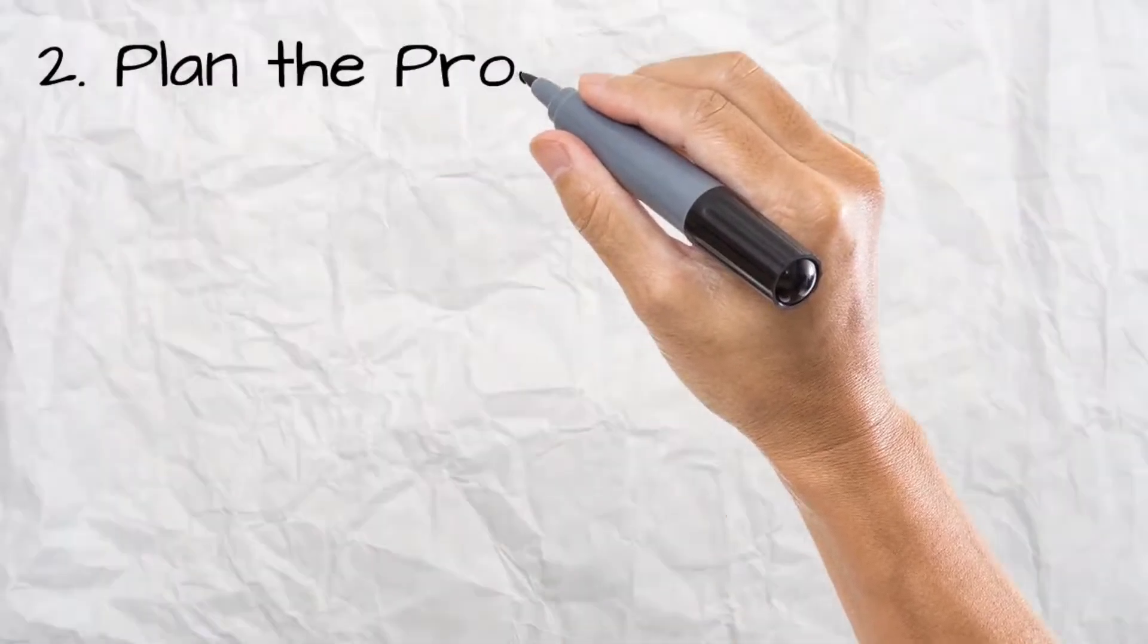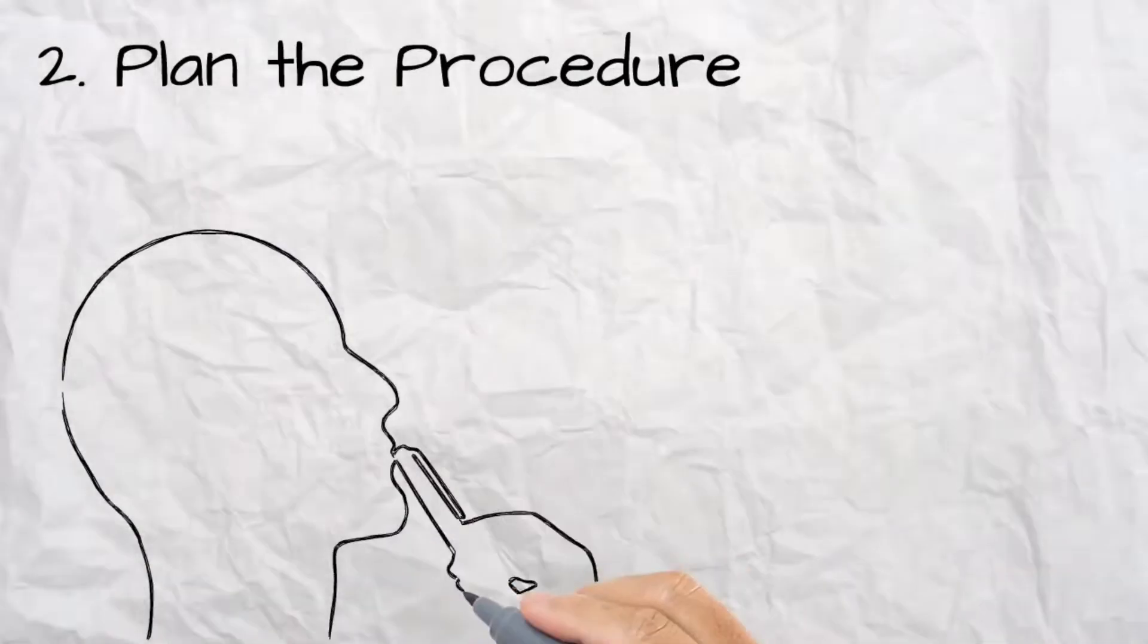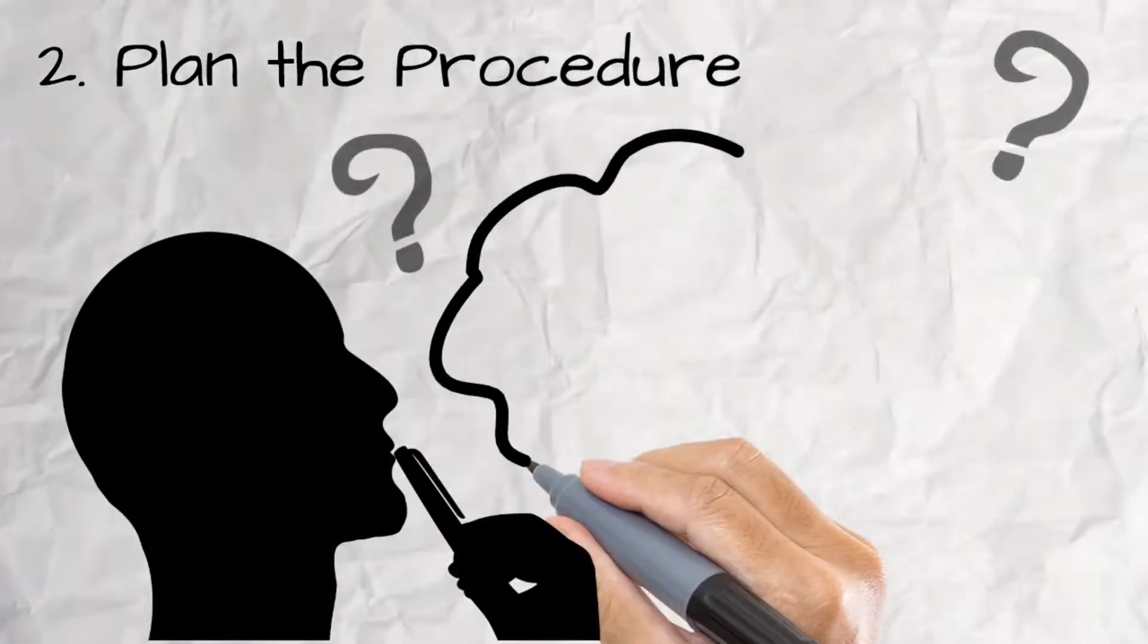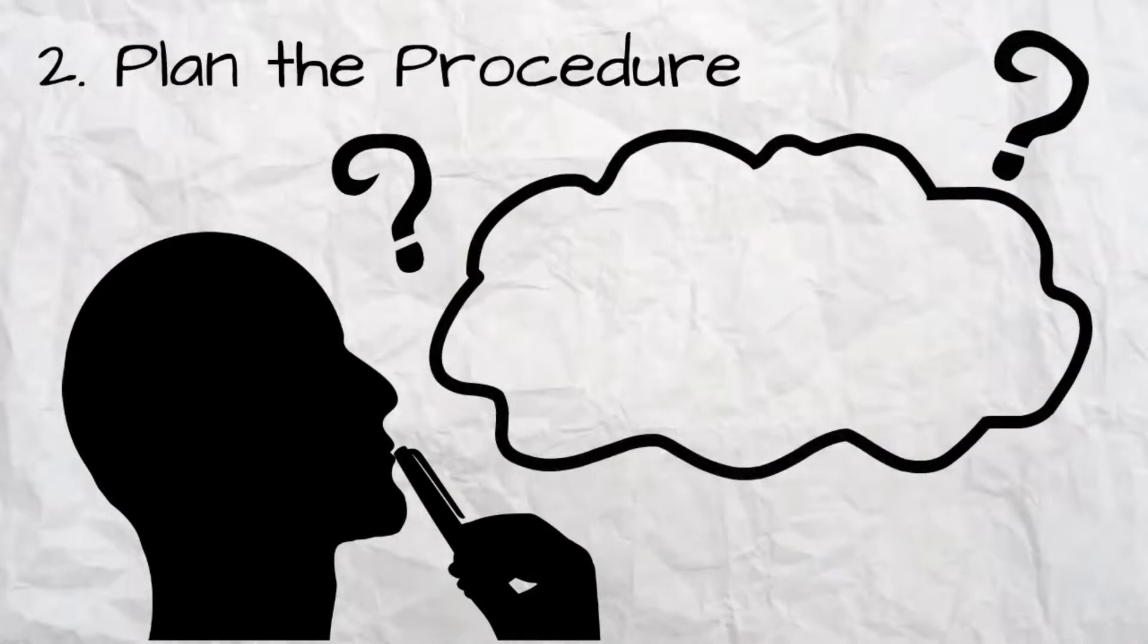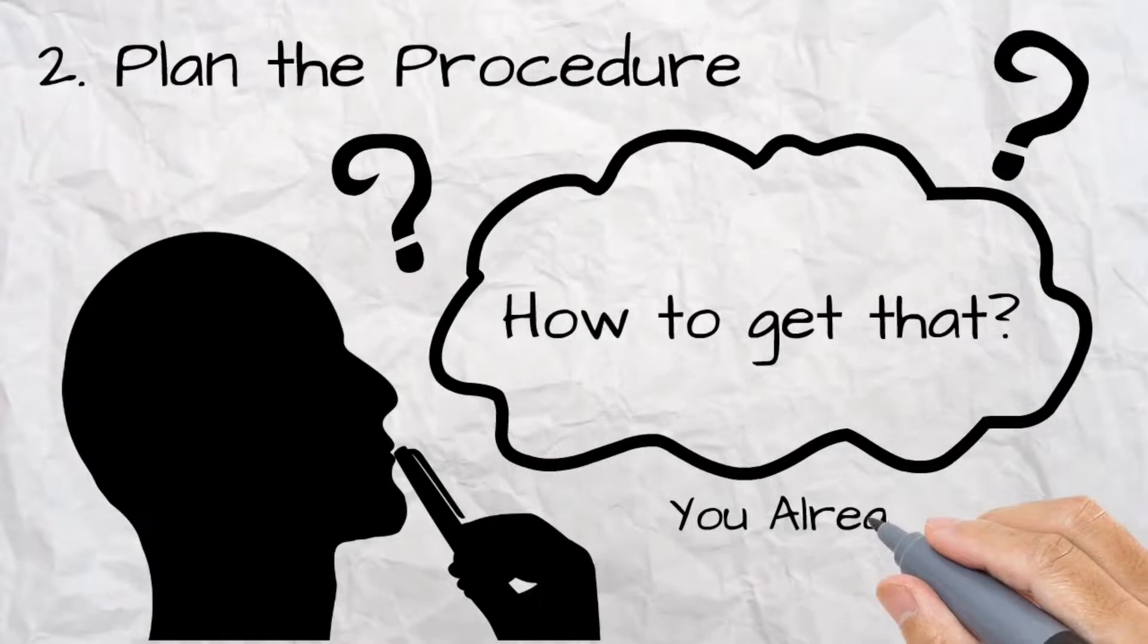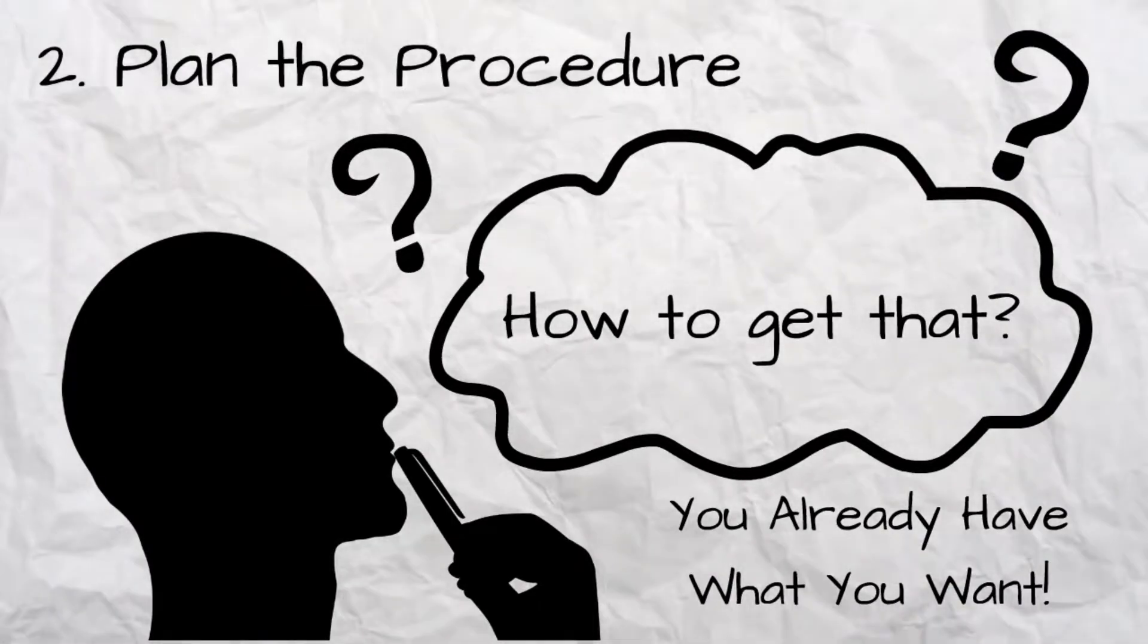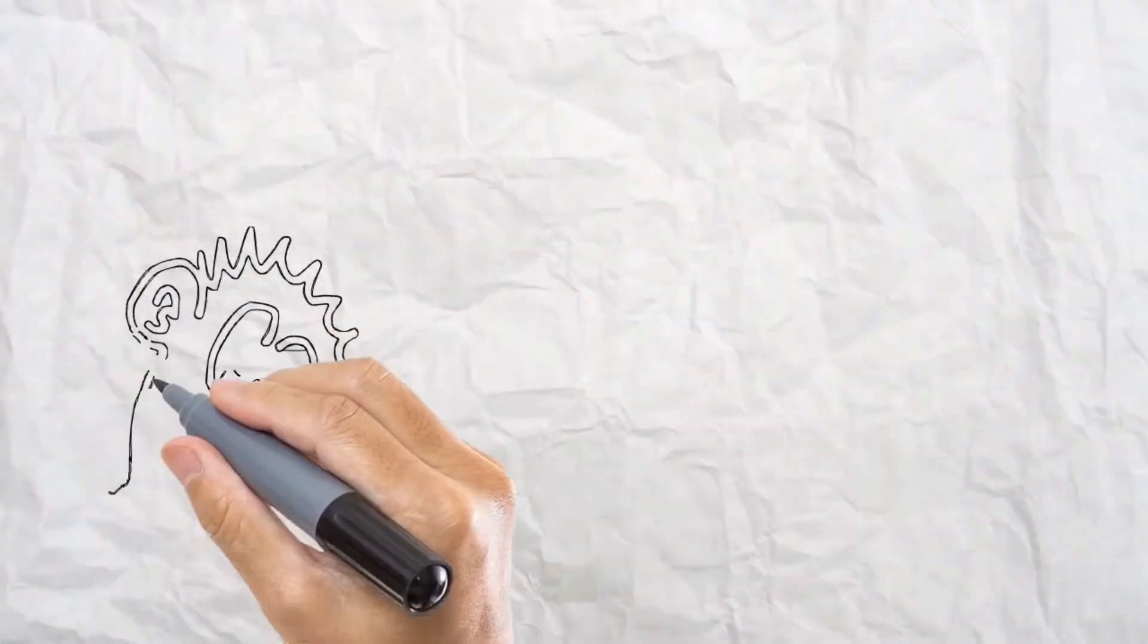Step 2: Plan the Procedure. Once you have found the answers to the questions before, you then need to ask yourself how you can get what you want. The best way to answer this question is to imagine you already have what you want. Now that might sound strange, but if you think about it...